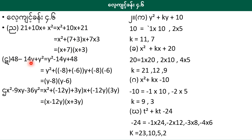48 minus 41 plus y squared, 1 squared minus 41 plus 48. If you want to write down a line, you can write down a line minus 40, minus 1, minus 4. The line is minus 40, so the line is minus 4.